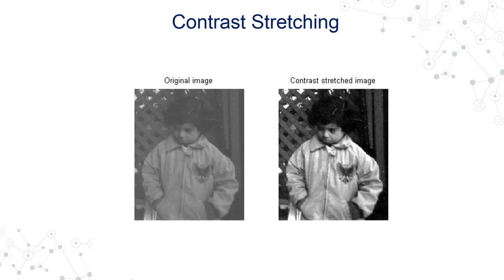We would look at contrast stretching and thresholding, where I keep a constant value and say: below this value the output goes to 0, and above that value the output goes to white. That would be thresholding. At the end we would be seeing intensity level slicing, where we select a particular band or slice of intensity ranges and assign a grey value to those ranges, while the remaining ranges are either assigned a low value or kept as they were. We would be performing all these transformations in MATLAB.